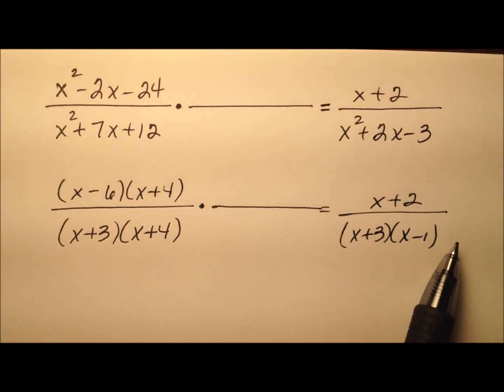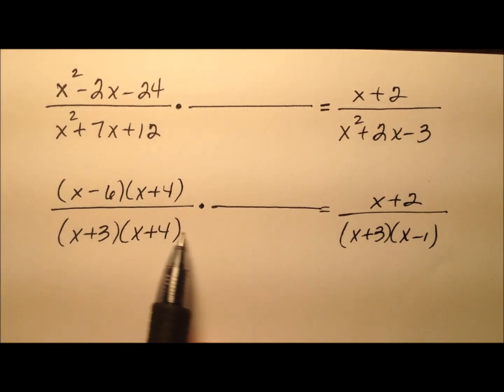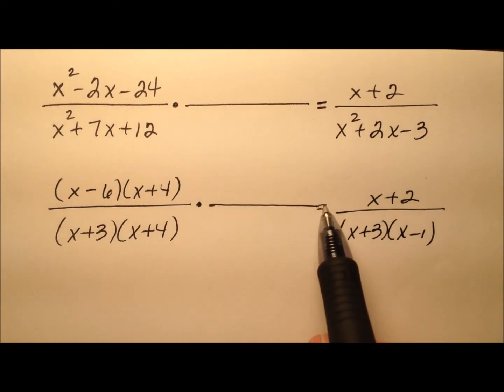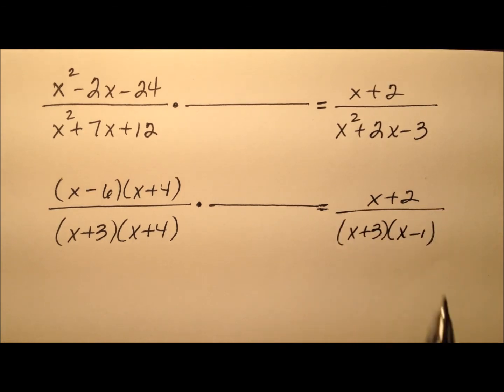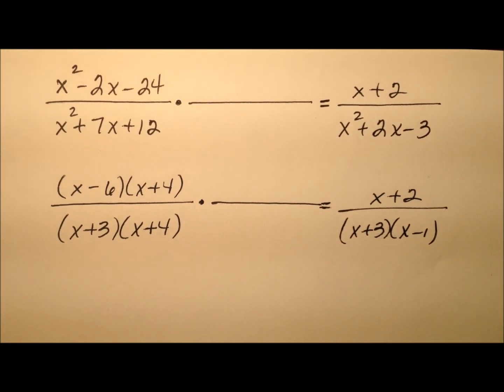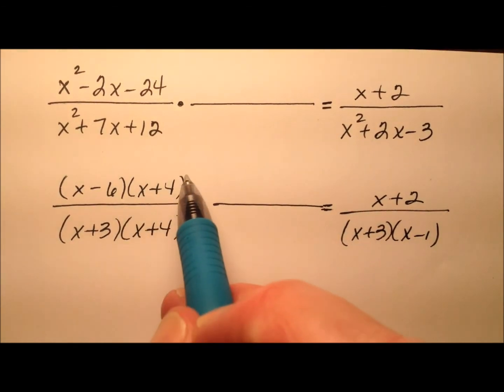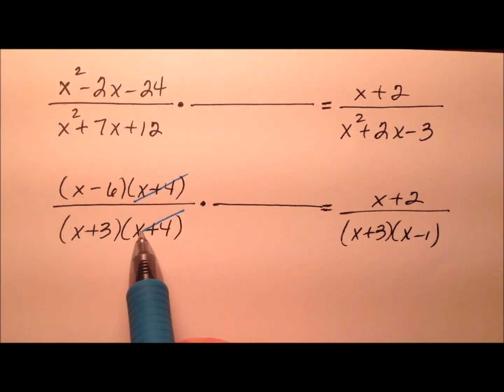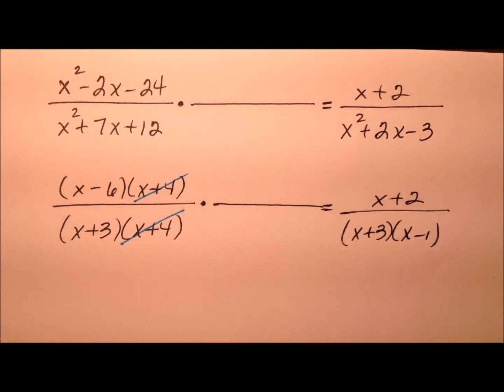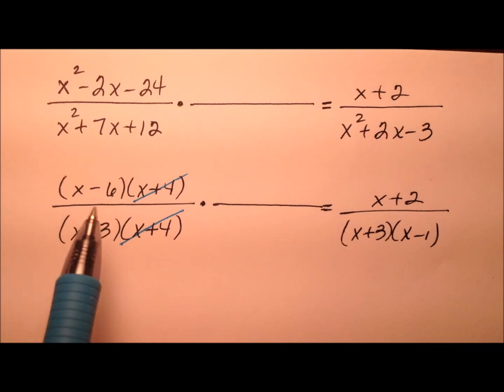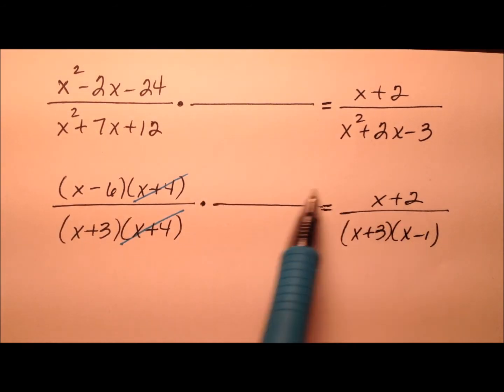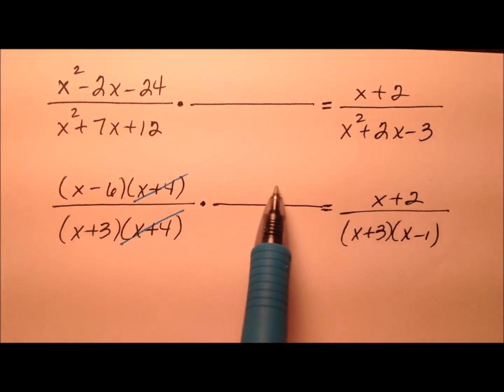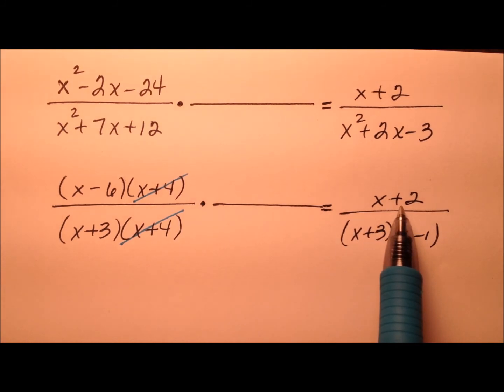All right, so I can see a couple of things are going to cancel out and a couple of things might not cancel out when I have this equal sign and put the answer over here. Okay, so let's go ahead and get started. I see that the x plus 4 here and the x plus 4 here are going to cancel out. When I multiply straight across, I'm going to multiply this x minus 6 times something and I'm going to get x plus 2.